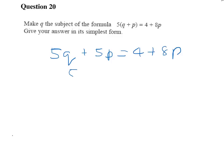So we'll move the P to the other side. So we've got 5Q equals 4 plus 8P minus 5P. So a very simple simplification there is to collect those P's together. So 8P minus 5P is 4 plus 3P.